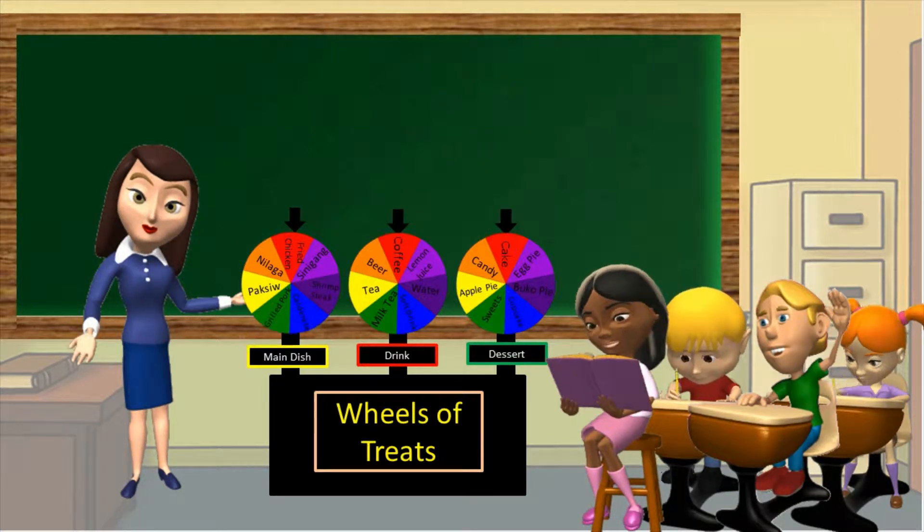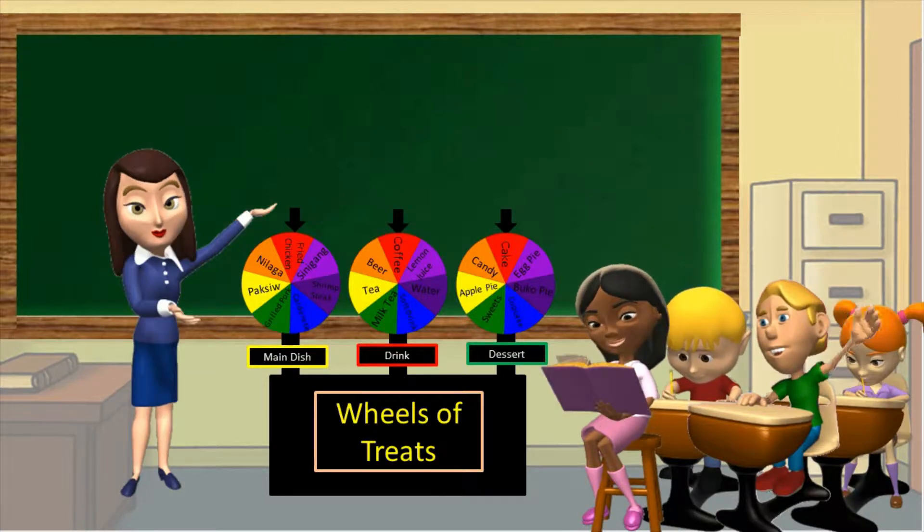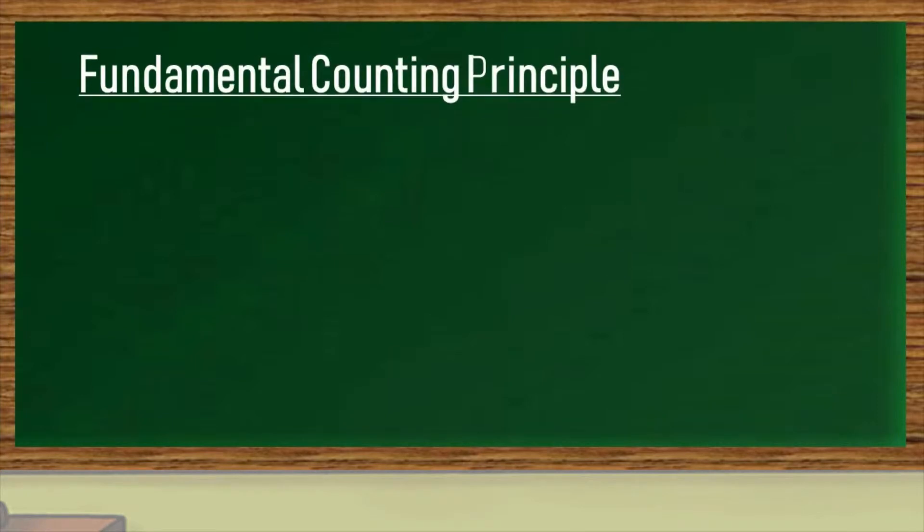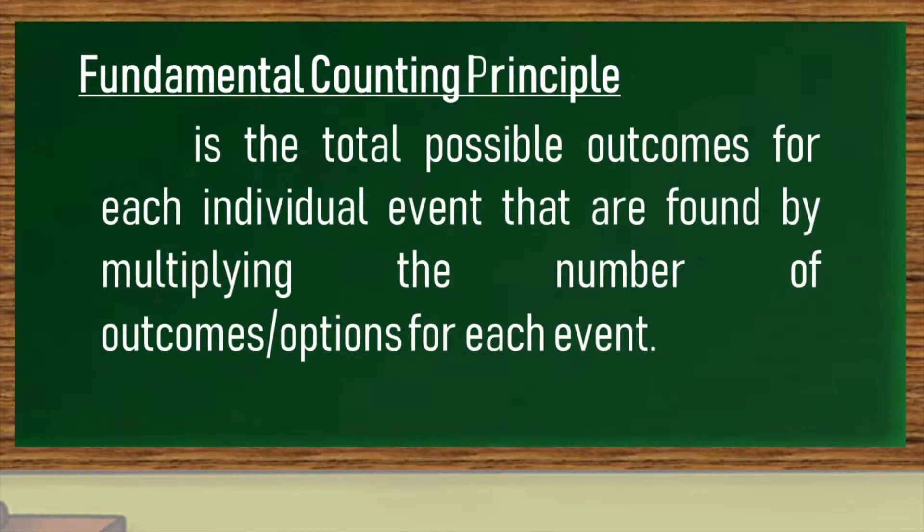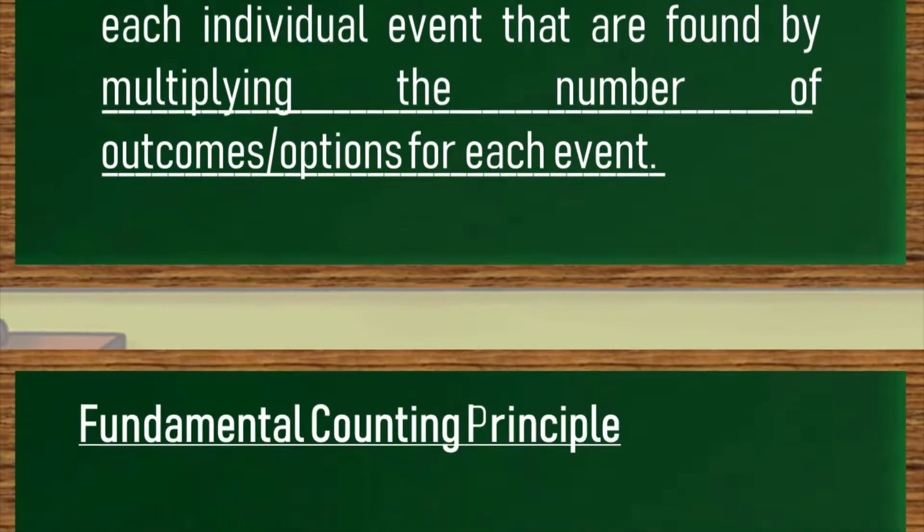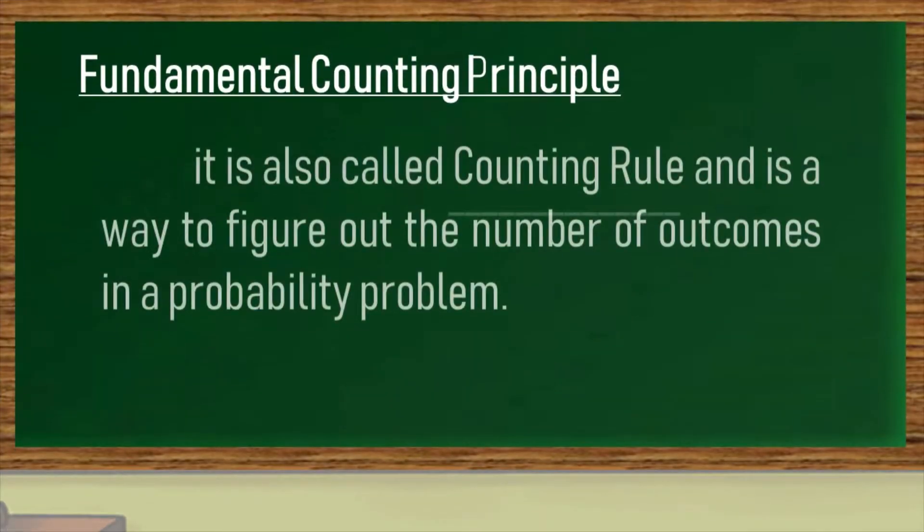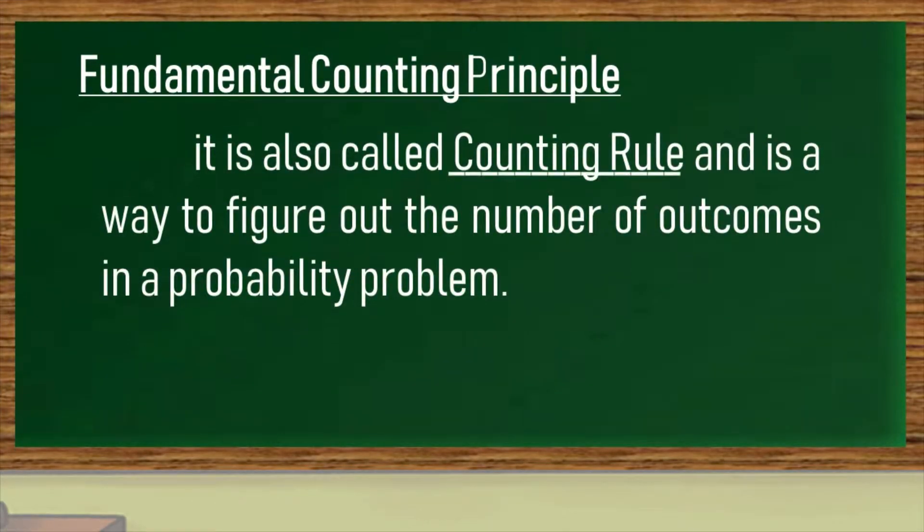Our topic is all about fundamental counting principle. Fundamental counting principle is the total possible outcomes for each individual event that are found by multiplying the number of outcomes or options for each event. It is also called counting rule and is a way to figure out the number of outcomes in a probability problem.